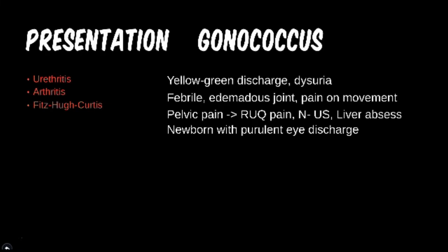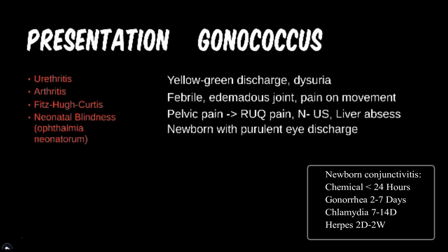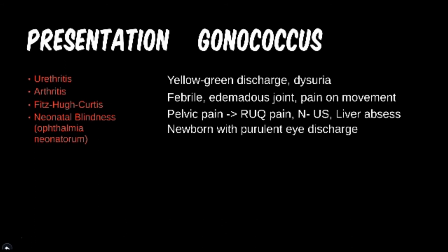A newborn with purulent eye discharge should make you think of gonorrhea. Ophthalmia neonatorum is a neonatal conjunctivitis that can occur in newborns, usually between days two and seven of life. Luckily, newborns are usually prophylaxed with antibiotic eye drops at birth to prevent harmful consequences such as blindness.